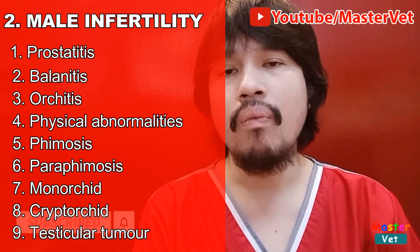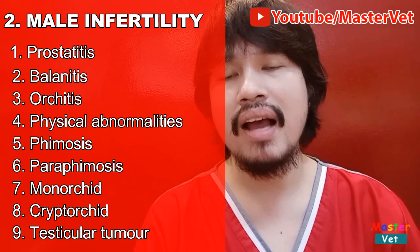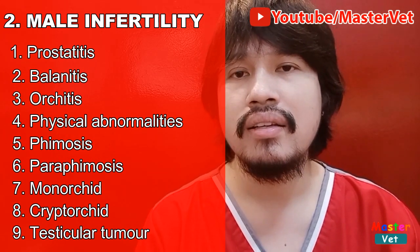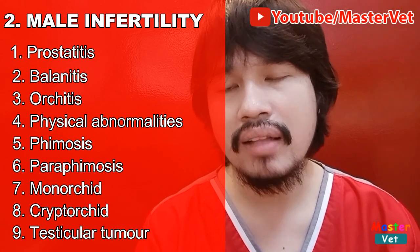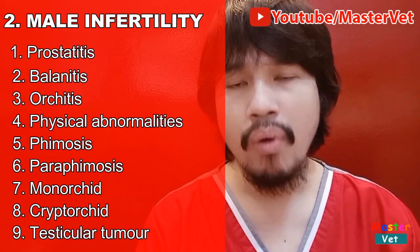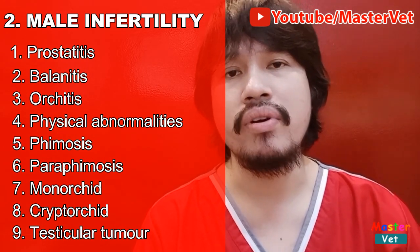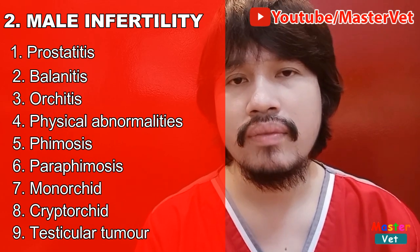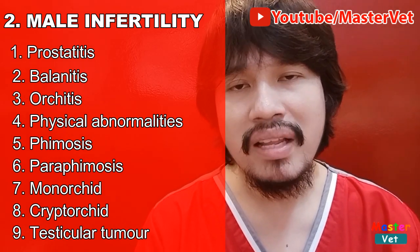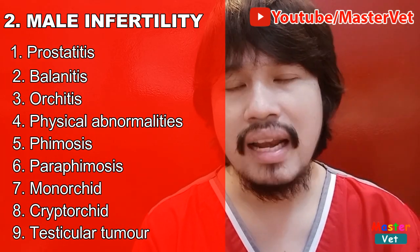Another one is yung male infertility o yung pagkabaog ng lalaking aso. Ano yung mga dahilan kung bakit nababaog naman yung lalaking aso? Marami tayo: prostatitis, balanitis, orchitis, physical abnormalities, phimosis, paraphimosis, monorchid, cryptorchid, and testicular tumor. Kapag may prostatitis, kung saan yung prostate gland is enlarged — ito ay namamaga, naiipit niya yung daanan nung similya ng lalaki. So, magkukos ito ng infertility doon sa lalaking aso.